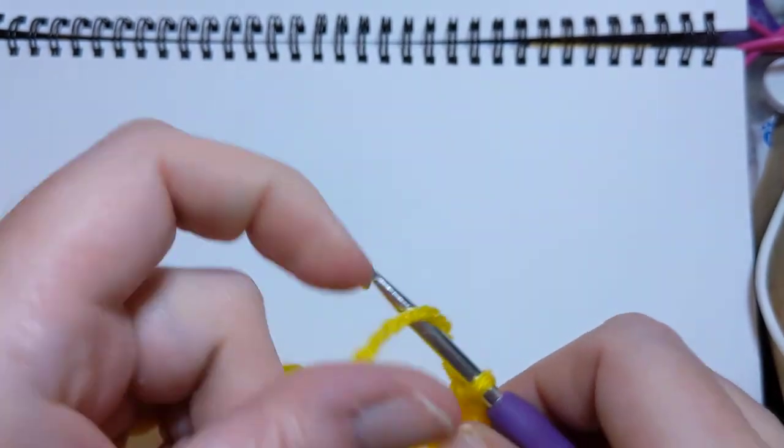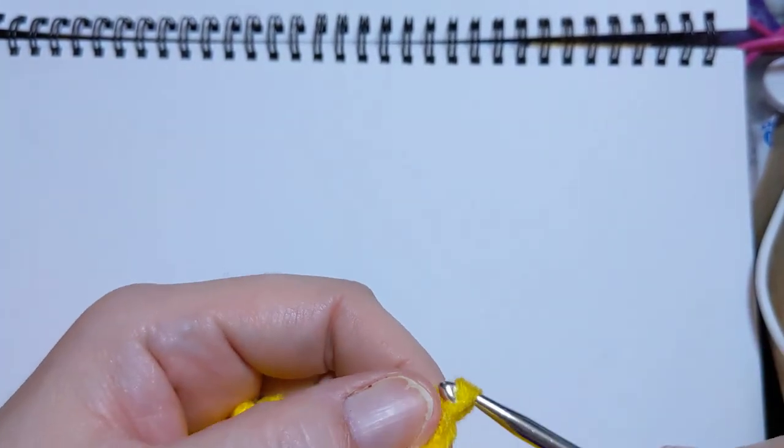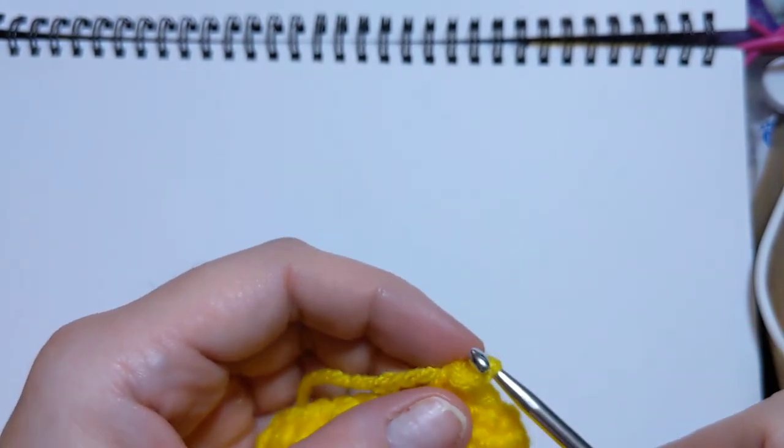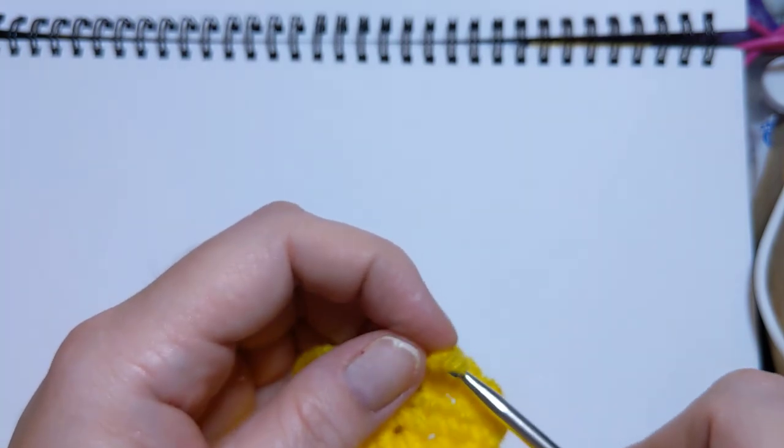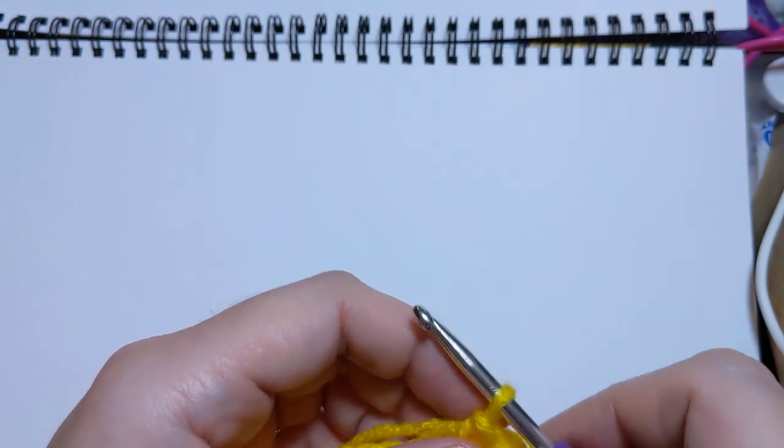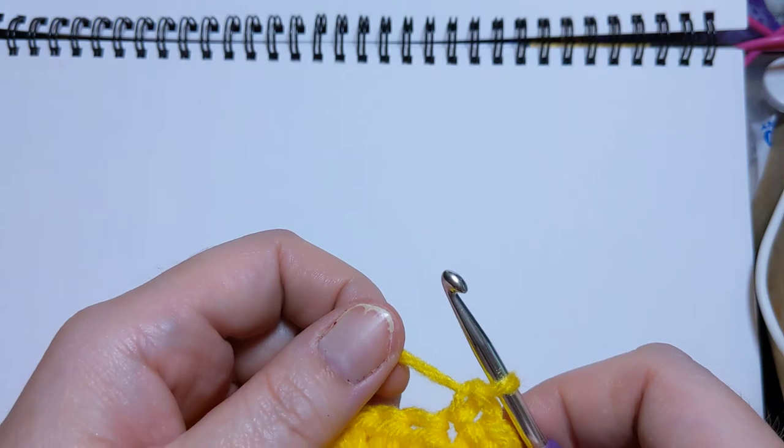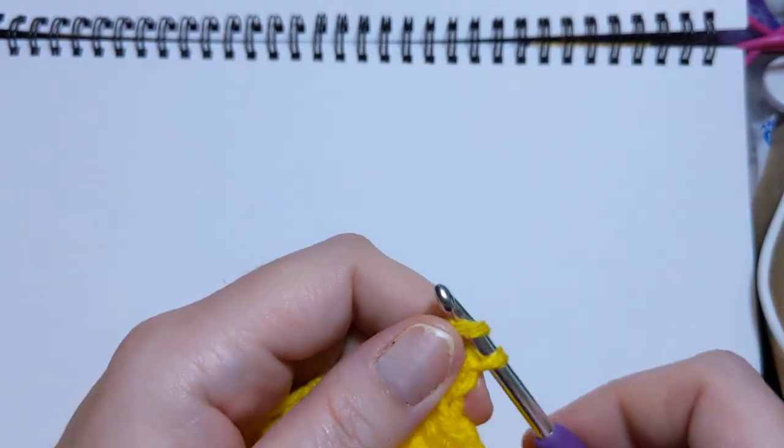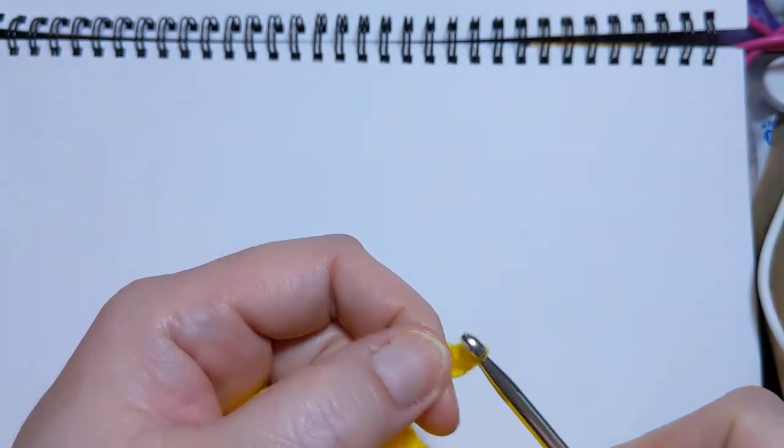Then we're going to chain three. One. Oh, goodness. I split my yarn. All right. We'll try that again. There is no shame in pulling out a stitch. All right. Starting it again. Let's try that again. We need to chain three. Okay. One. Two. Three.